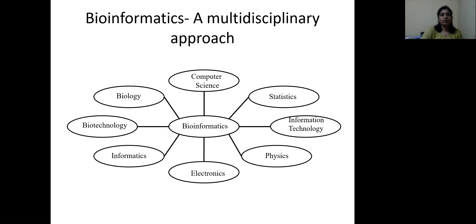This slide explains bioinformatics as a multidisciplinary approach. Bioinformatics requires the knowledge of many fields of science, and it is also useful in many branches of life science research — which is why it is considered a multidisciplinary approach. The branches of science it draws from include computer science, biology, biotechnology, informatics, information technology, statistics, physics, and electronics.